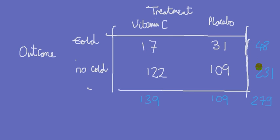When we run the basic crosstabs analysis, the null hypothesis is there is no relationship or no association between the two factors — here being treatment and outcome. Looking at the data, it suggests there is a relationship: more than half the people who had a cold were in the placebo group, and more than half who did not have a cold had taken vitamin C.